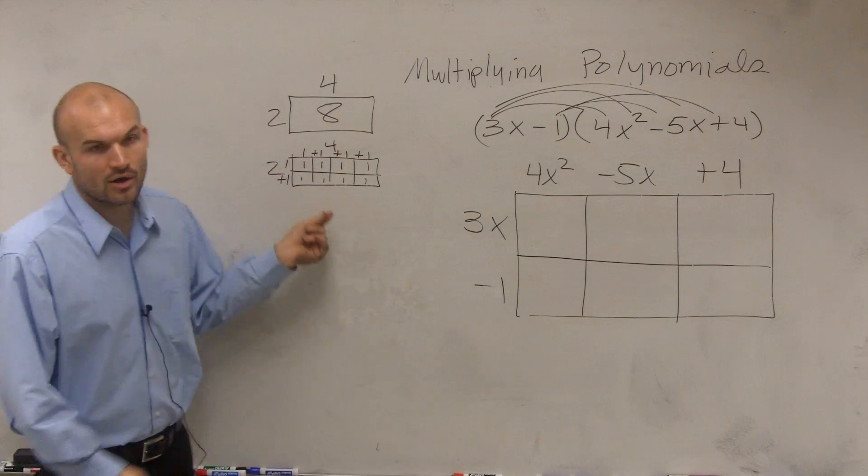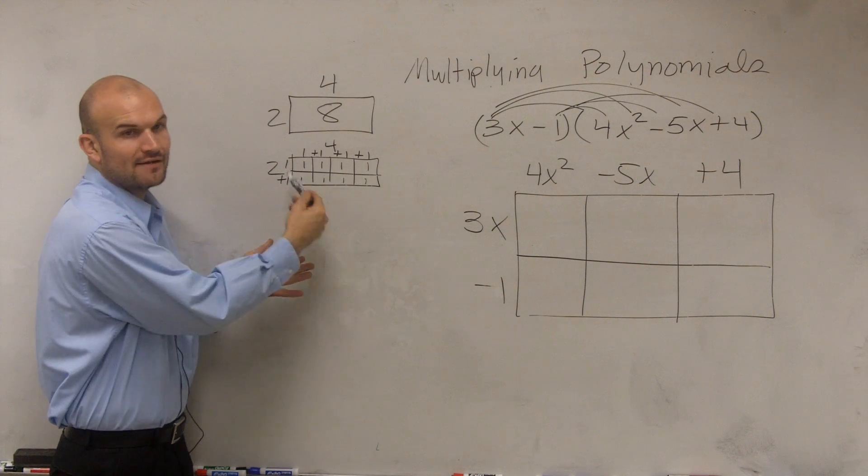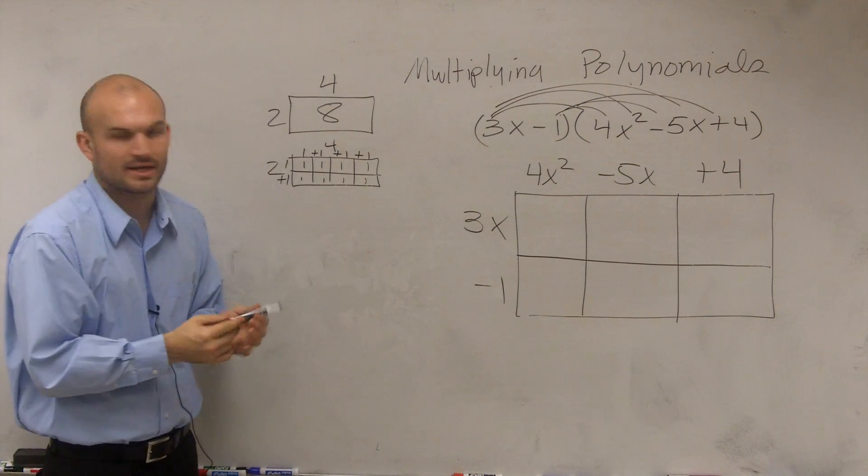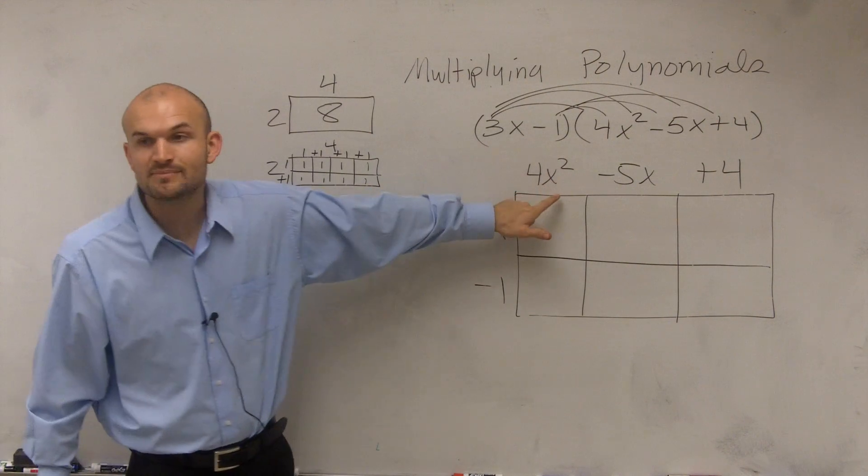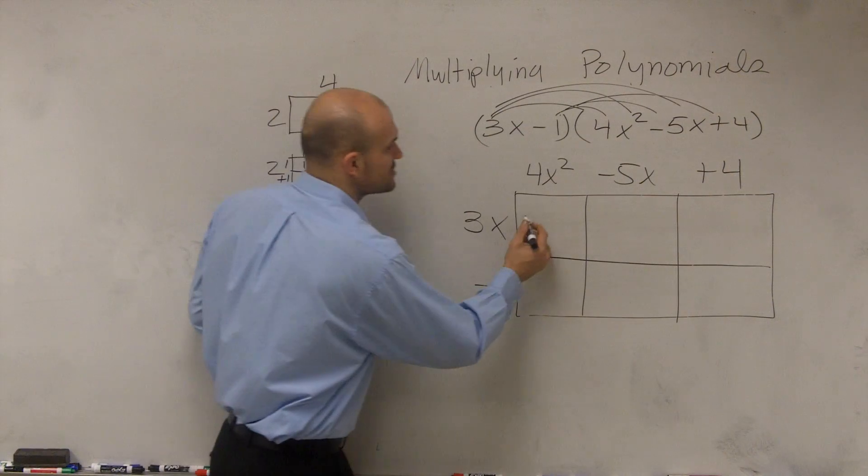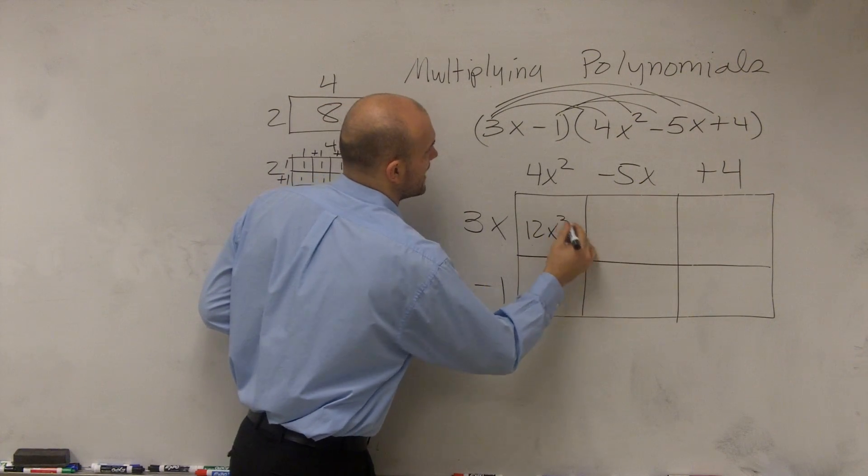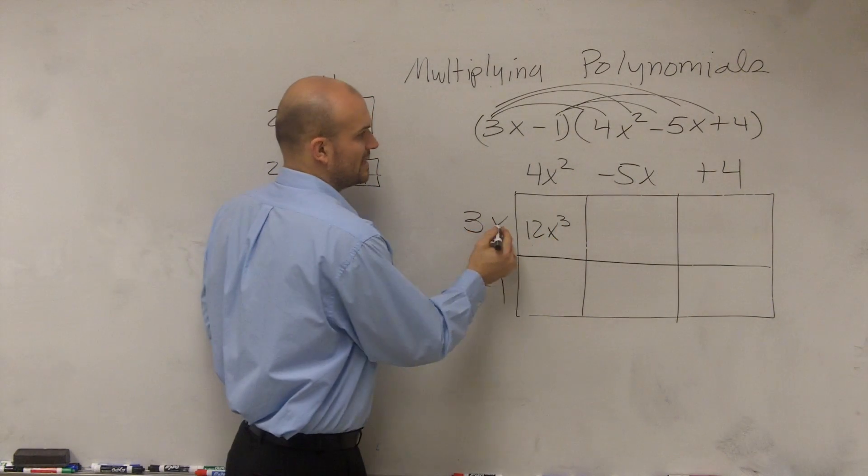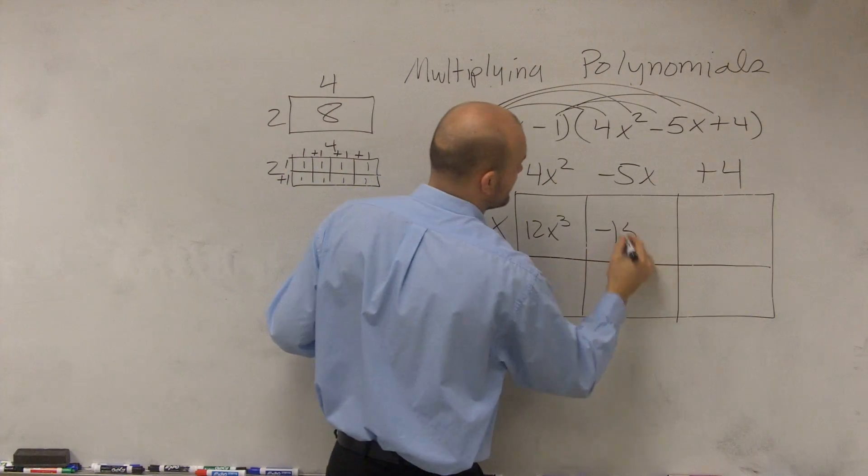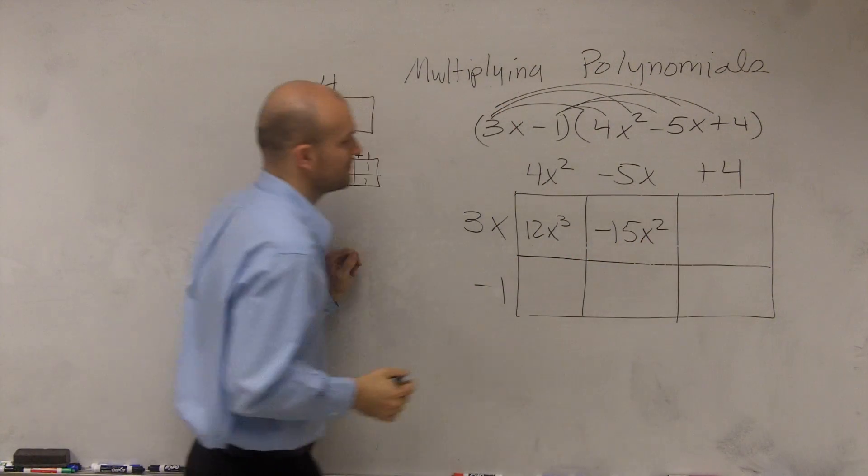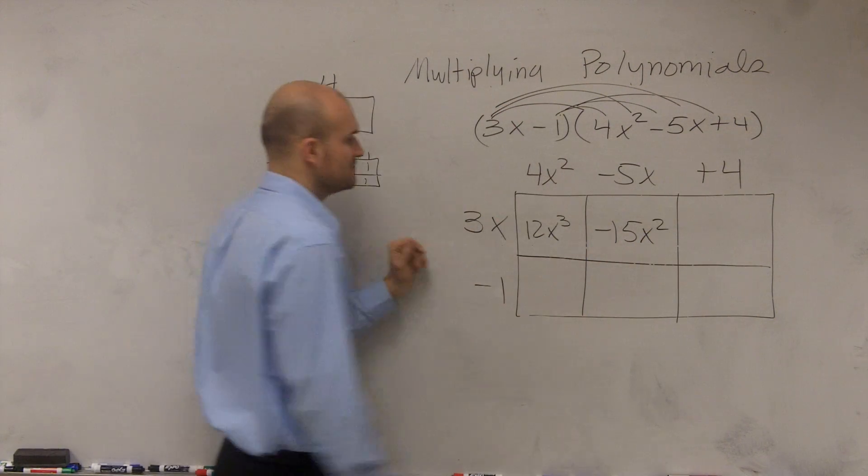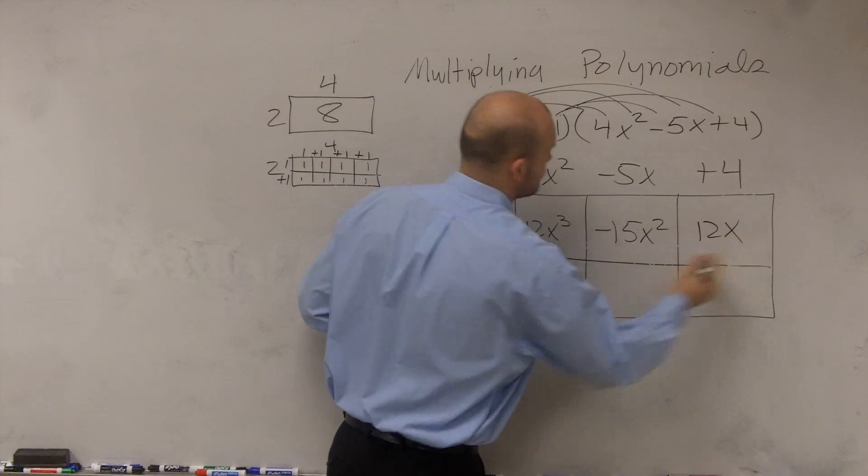So now, like I did before, I'm just going to find the area of every single box and then add them up together. So 3x times 4x squared is 12x cubed, 3x times negative 5x is negative 15x squared, 3x times 4 is 12x.